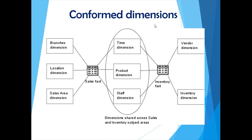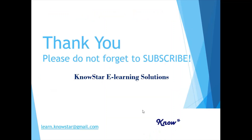When dimension tables are common across all fact tables and all data marts, they are known as conformed dimensions. It is a best practice to have as many dimensions as possible as conformed dimensions, because the basic principle of a data warehouse is being a single source of truth. One kind of information or one subject area should reside in one place to prevent multiple copies and inconsistencies in that information — which is not what a data warehouse aims to have.